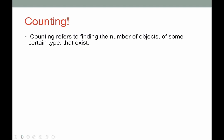Let's talk about counting. Counting refers to finding the number of objects of some certain type that exist. It can be very simple — like how many people are sitting in the room you're in — to more complex, like how many ways can you get two of a kind and three of a kind in a five-card hand of poker.